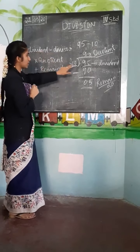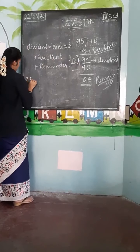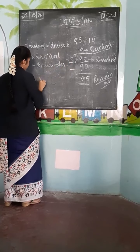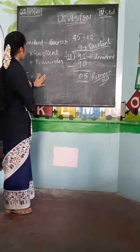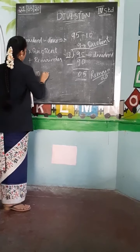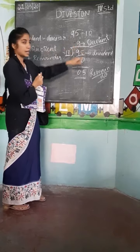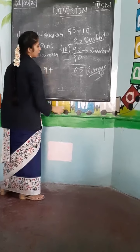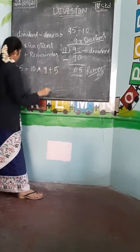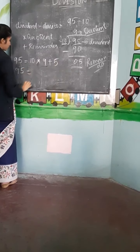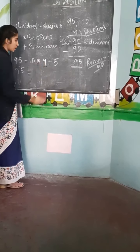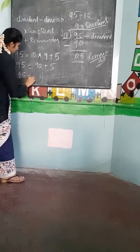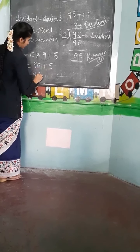What is the dividend here? 95. So: 95 equals divisor — what is the divisor? 10 — into coefficient — what is the coefficient? 9 — plus remainder — what is the remainder? 5. So: 95 equals 10 into 9, which is 90, plus 5. That gives 95 equals 90 plus 5, equals 95. Did you get the dividend?